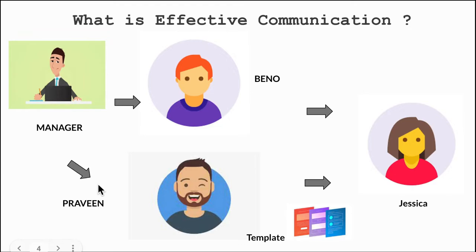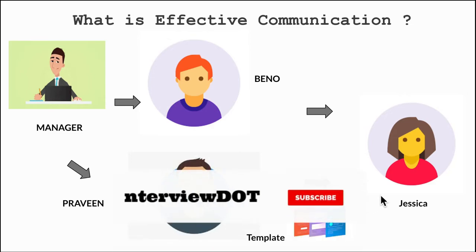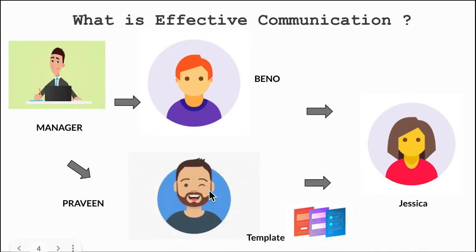Now the same manager asks Praveen to collect information from Jessica about the new feature. Before going to Jessica, Praveen tries to understand exactly what the manager wants. He collects all the questions, prepares a template or form, and takes a pause. Once the set of questions is gathered, he goes to Jessica, sets up a meeting, asks all the questions, gets the answers, and goes back to the manager with all the information. There is no back-and-forth communication — this is called effective communication.